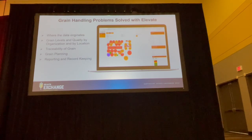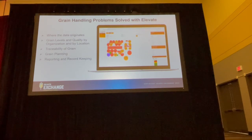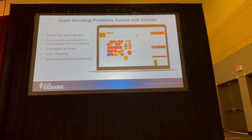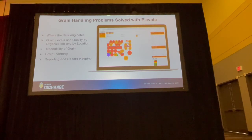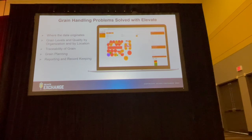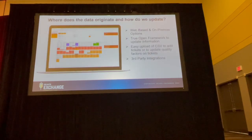The touch points we're going to cover today are where the data originates and how it gets into Elevate. We'll look at grain levels and quality by organization, location, and bin, drillability into the data, traceability of grain, planning for your harvest ahead of time, planning for deliveries during the grain, as well as reporting and record keeping.